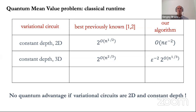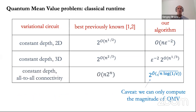In the three-dimensional case, our algorithm has exponential runtime but the exponent is slightly better than what you get from tensor network contraction. The upshot is that if we hope to achieve quantum advantage, we should somehow improve qubit connectivity beyond a two-dimensional lattice, or improve circuit depth to say logarithmic or linear depth. For general constant-depth circuits that are not geometrically local, our algorithm has runtime exponential in the square root of m. One important caveat: we can only compute the magnitude of the quantum mean value — the mean value can be positive or negative but our algorithm cannot determine the sign.